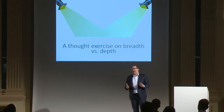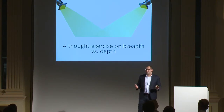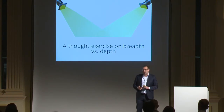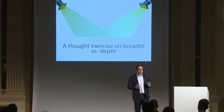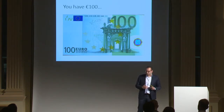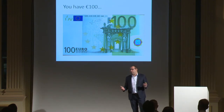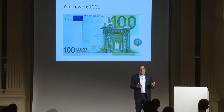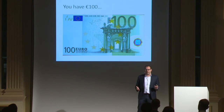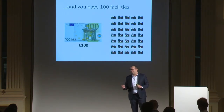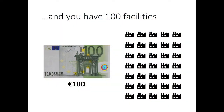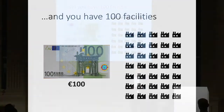So how does this apply to network security monitoring, and specifically network security monitoring for industrial control systems? Let's go through a thought exercise around breadth versus depth. I'm going to give you a budget of 100 euro — that's what you have to spend on defending your environment. You've got 100 industrial facilities that you need to protect from bad guys trying to disrupt your industrial processes or cause harm to your organization.